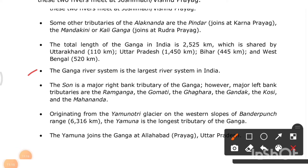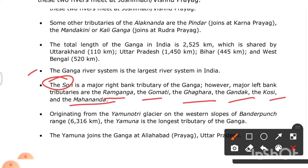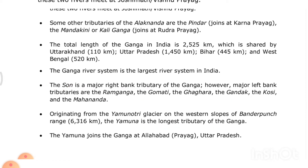The Son is a major right-bank tributary of the Ganga. The major left-bank tributaries are the Ram Ganga, Gomti, Ghaghra, Gandak, Koshi, and Mahanadi. Originating from the Yamunotri Glacier on the western slopes of the Bandarpunch range, the Yamuna is the longest tributary of the Ganga and joins it at Prayagraj (Allahabad) in Uttar Pradesh.